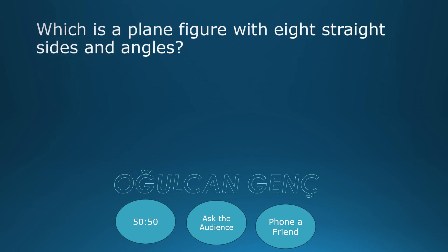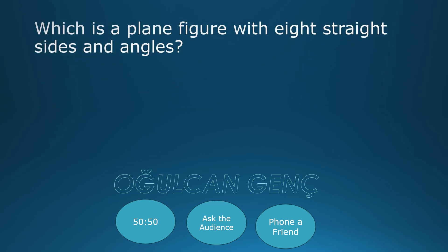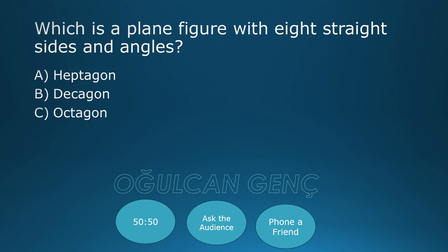Which is the plane figure with 8 straight sides and angles? Heptagon, Decagon, Octagon, Nonagon. Final answer: Octagon, C. Correct answer.